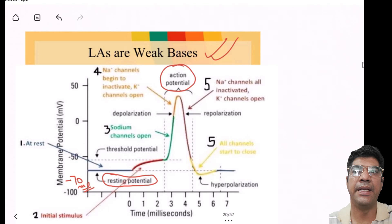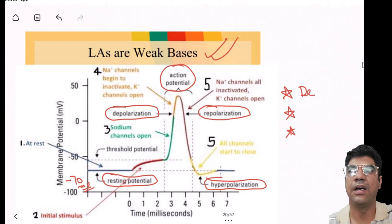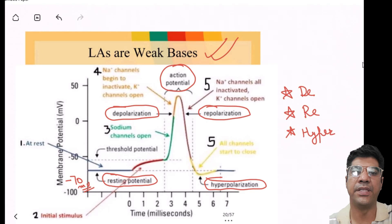An action potential is the sequence of events consisting of depolarization, repolarization, and hyperpolarization. Depolarization is a process by which the neuron membrane potential becomes less negative, which is strong enough to open the sodium channels.